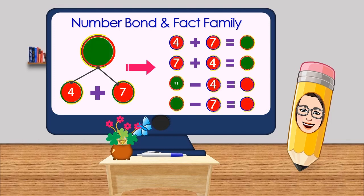The last one. Oh, the whole is missing and the parts are given. So we have 4 and 7 - we can combine that to make 11. Yes, that's right, 11.